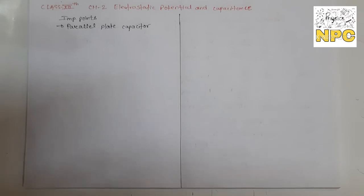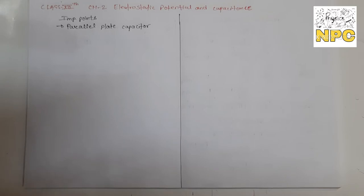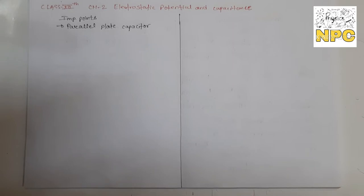There are two reasons we use the parallel plate capacitor. First, the energy is bounded. Second, in the parallel plate capacitor, the two plates are kept very close to each other, which means the energy is bounded and the capacitance is high. Both of these things are what we need, and we get them in the parallel plate capacitor — that's why we mostly use it.